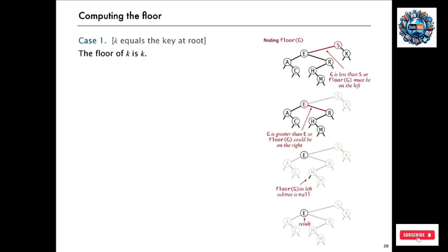Just for example, let's take a look at the problem of computing the floor. So what we want to find — say we're seeking the floor of G — that's the largest key in the data structure that is less than G. In this case, the answer is E. So let's take a look at the path we have to take in the tree to figure that out.